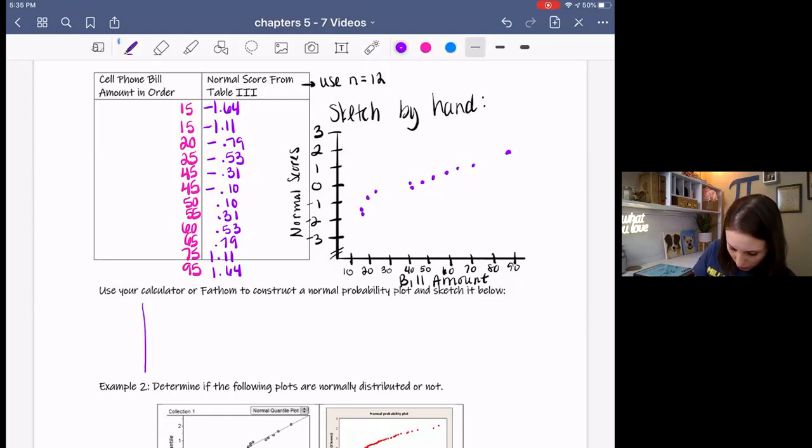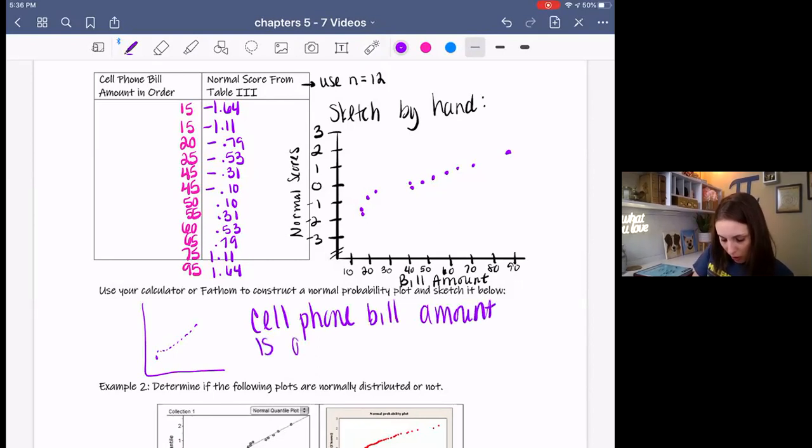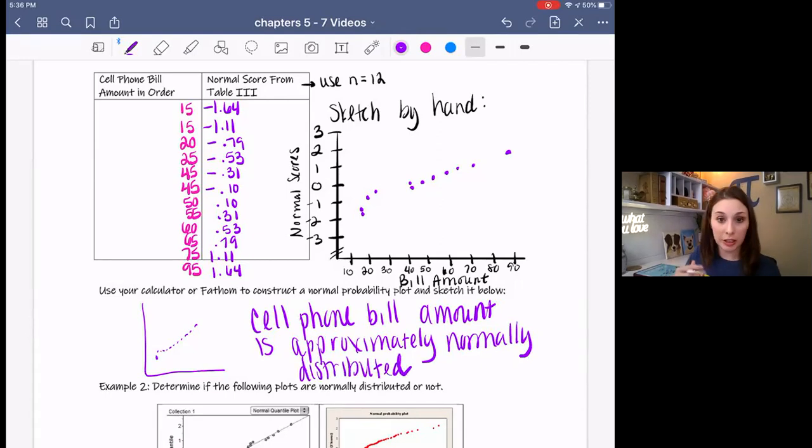So we could draw this little sketch down here just so that we finish the problem. We kind of have a little bump and then it kind of goes up like that. That's a really bad sketch, but I've already drawn it above. So it's okay. And we would say that this variable cell phone bill amount is approximately, whoops, approximately normally distributed because it follows a linear pattern.